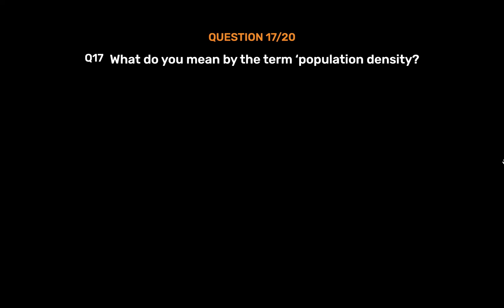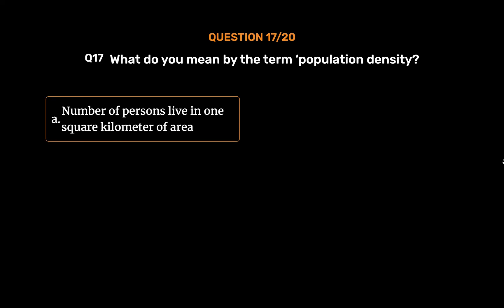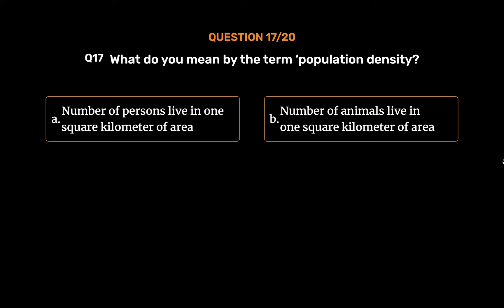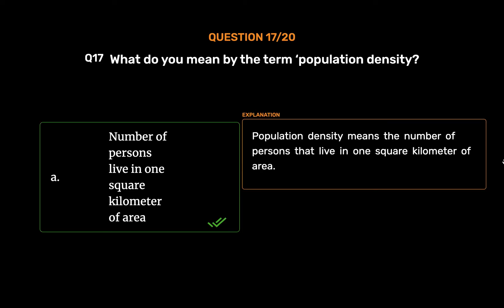Question number 17. What do you mean by the term population density? Option A: Number of persons living in 1 square kilometer of area. Option B: Number of animals living in 1 square kilometer of area. Option C: Number of persons living in 100 square kilometers of area. Option D: None of these. The correct answer is Option A. Population density means the number of persons that live in 1 square kilometer of area.